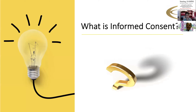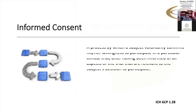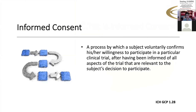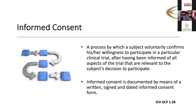So the first question is: what is informed consent? This is the GCP definition. Informed consent is a process — a very important word to remember. It's a process by which a subject voluntarily confirms his or her willingness to participate in a clinical trial after having been informed of all aspects of the trial relevant to their decision to participate. The key points are: it's a process, it's voluntary, and the information must be relevant to help them make a decision. Informed consent is documented by means of a written, signed, dated informed consent form.